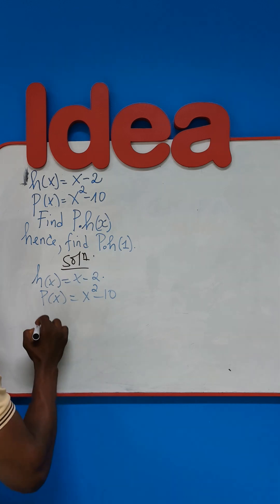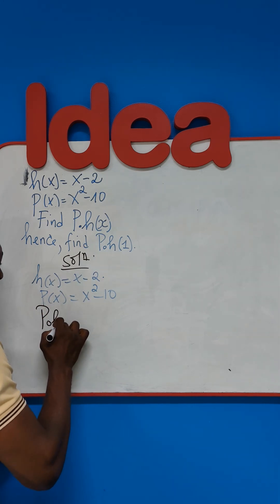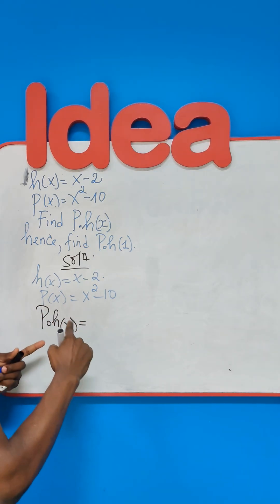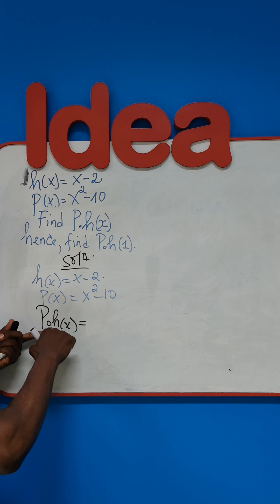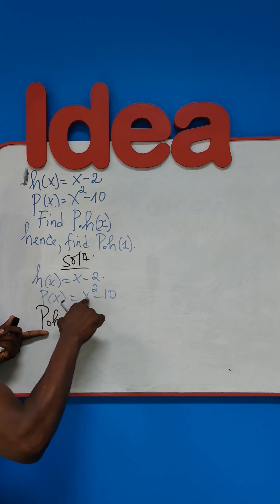Now, P of H of X means we will go into the function P, which is this. And everywhere we see X, we will put the function H.